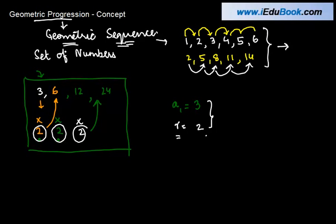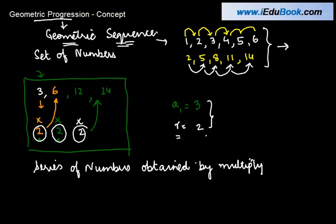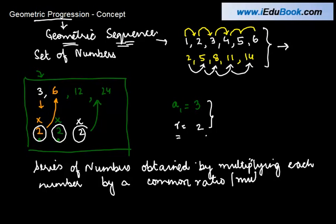So basically, a geometric sequence or a geometric progression is a series of numbers obtained by multiplying each number by a common ratio, or you can say a common multiple to arrive at the next number.